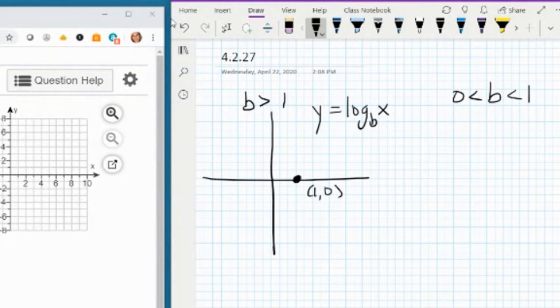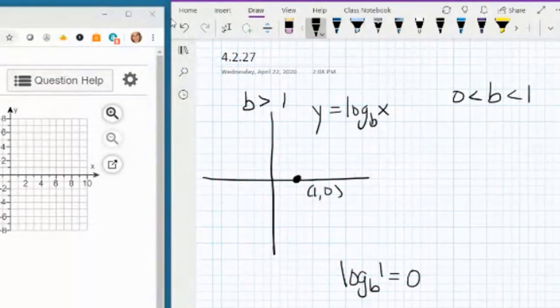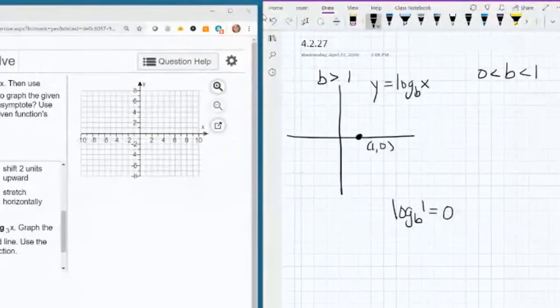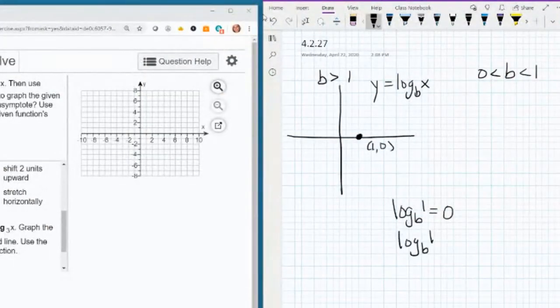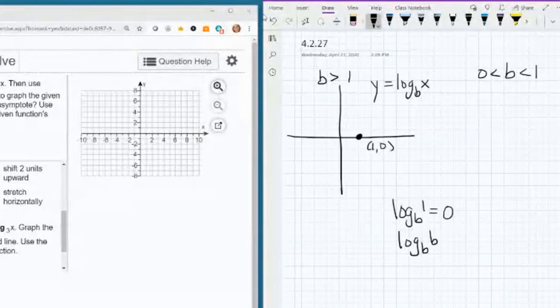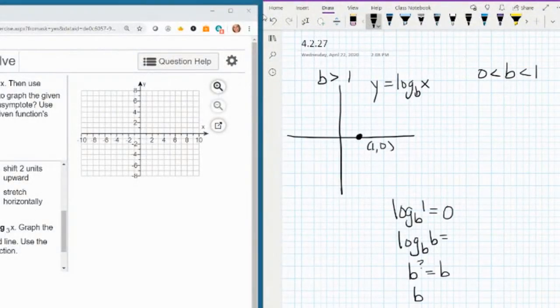y = log base b of x, no matter what b is, is going to go through the point (1, 0). And there's a reason for that, because log base b of 1 is saying what power do you raise b to to get 1? And any number raised to the 0 power is 1. So it goes through the point (1, 0).